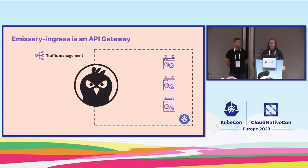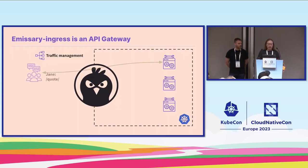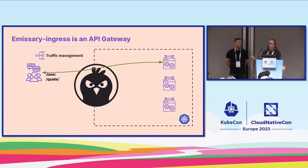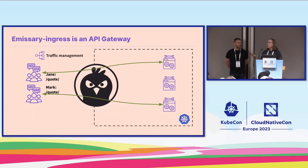Since it is an API gateway, one of its core functions is traffic management. If you've got Jane out in the cloud and she wants to request a quote from the quote-of-the-moment service, Emissary will accept that request and route it through to one of the workloads. If Mark asked for the quote of the moment, he may end up talking to a different instance of that workload.